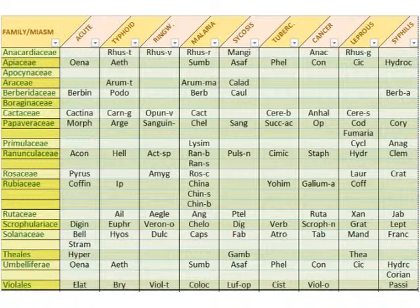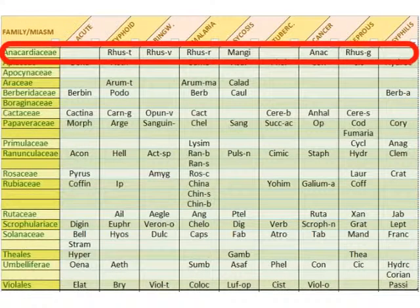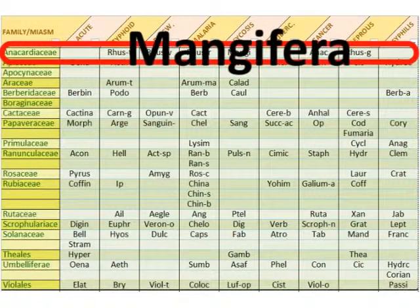Which is the remedy of the Anacardiaceae family in the psychotic miasm? We have the charts — you go to your chart and you see Mangifera. Yes, that's the mango tree. You might not know this remedy at all, but that's no problem: sensation is clear, miasm is clear, and the remedy is there in the box. You can give it with full certainty. If your sensation and miasm assessment was right, the remedy will do the trick — it is the simillimum. This is confirmed over and over again. Although this is a work in progress, many people work with this system and many cases already confirm that the theory is solid.